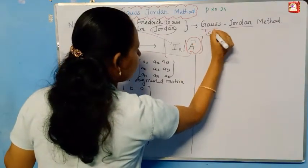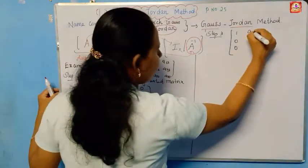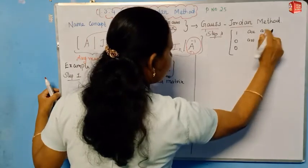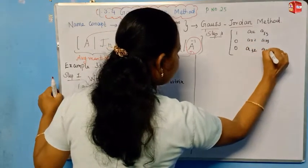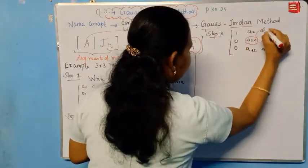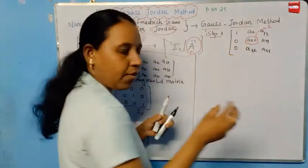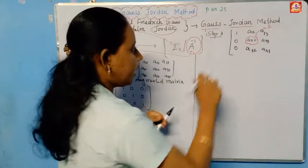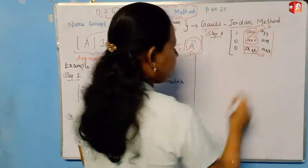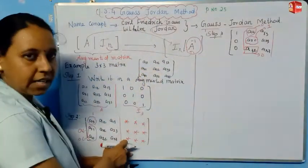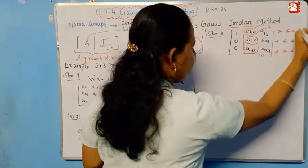Step 3: We focus on the next diagonal element, A22. We will add 1 in the diagonal corner of the identity matrix. The remaining elements — A12, A21 — will be converted to zero. We place a star value and change the numbers accordingly. Step 4: We then focus on A33 — the third diagonal element — and similarly convert A13 and A23 to zero using elementary operations, placing the appropriate values.